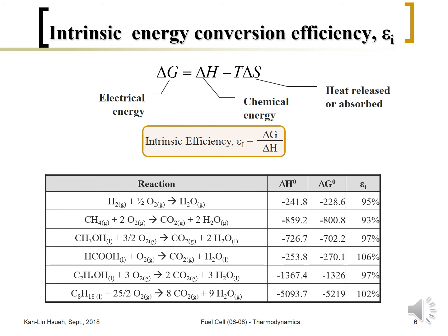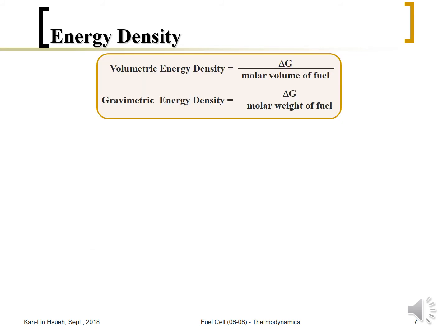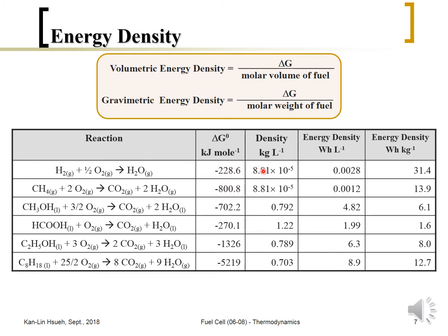From thermodynamics we can also calculate the energy density if we know the volume or the weight. For gas-phase fuels, the ideal gas density at one atmosphere (one bar) is assumed. For liquid-phase fuels, the liquid density is used and can be found on the website. Dividing the gravimetric energy density by the density gives the volumetric energy density.